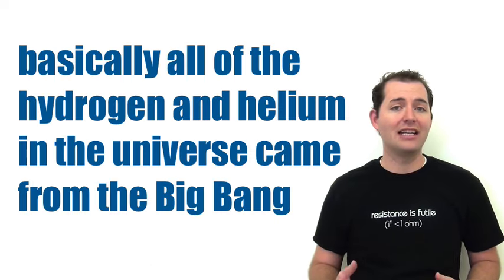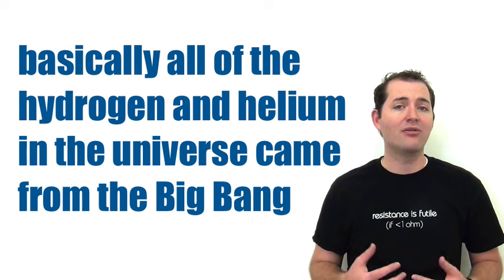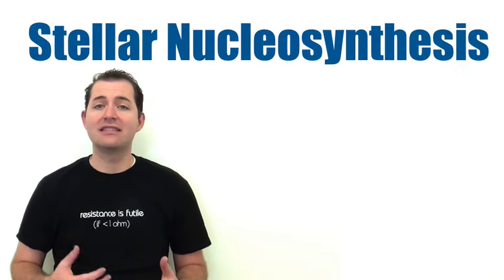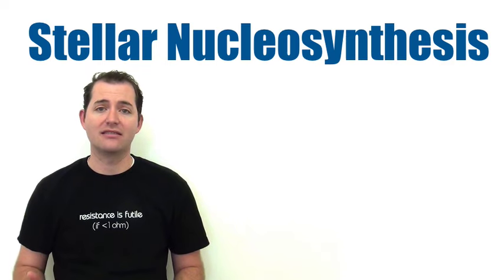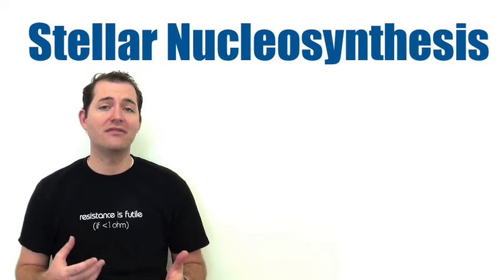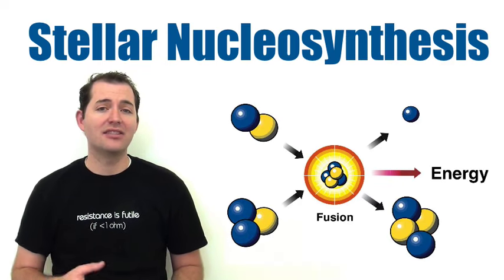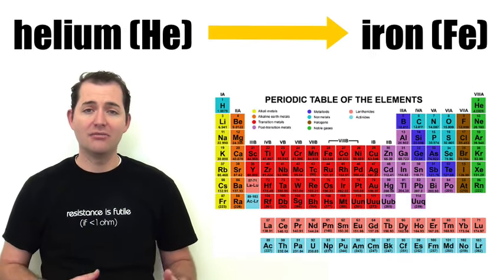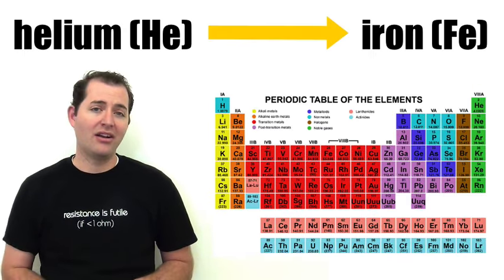The next major point where elements are formed is in stellar nucleosynthesis. This takes place through the process of fusion in the center of stars and is responsible for the formation of all of the elements from helium all the way up to iron on the periodic table. The formation of these elements takes place in the center of stars through a process called fusion.